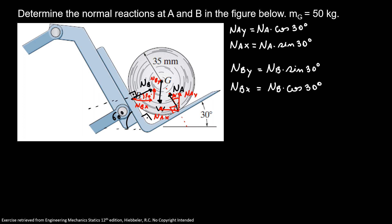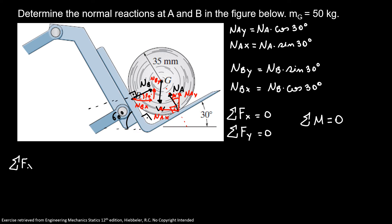Now we can write the equations of our equilibrium. So I have the sum of the forces in X has to be 0, the sum of forces in Y has to be 0, and the sum of the moments has to be 0 as well. Now I'm going to start with the sum of forces in X equal to 0.